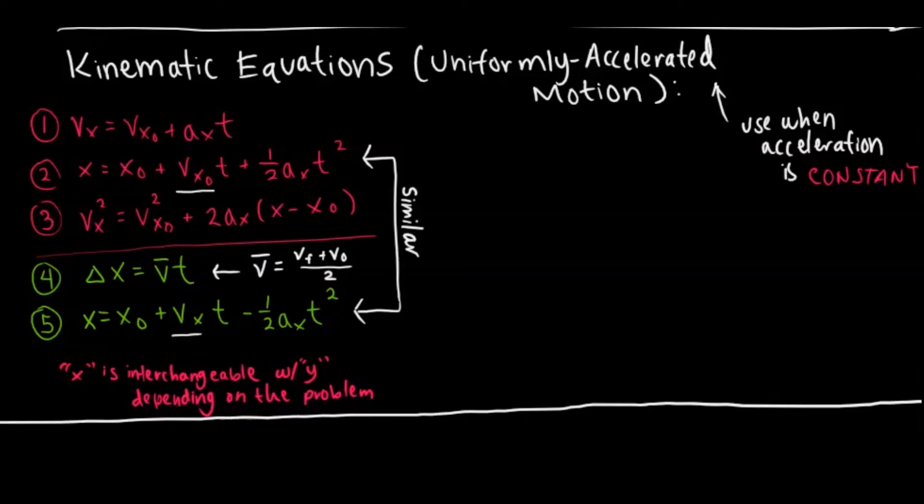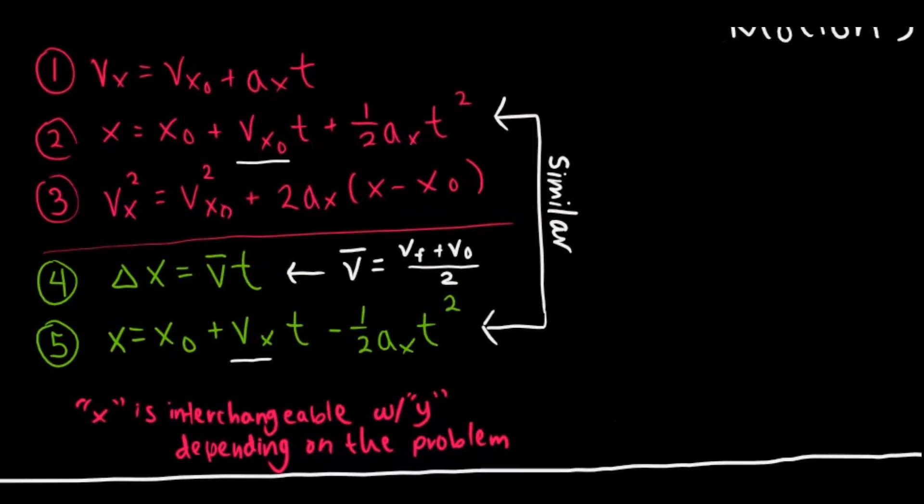Now let's look at the kinematic equations — these are the uniformly accelerated motion equations. Use these when acceleration is constant. If acceleration isn't constant, you can break the problem apart to analyze it in parts where acceleration is constant. The first three equations are on your reference table, but the two in green are not, and those would probably be helpful to memorize. Equations two and five are similar — the only difference is that initial velocity is swapped with final velocity, and instead of plus one-half a·t², it becomes minus one-half a·t². If you have an unknown variable and know the other three or two variables, you can plug them in to solve.